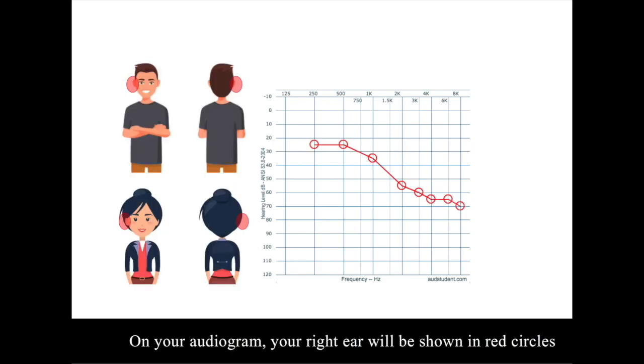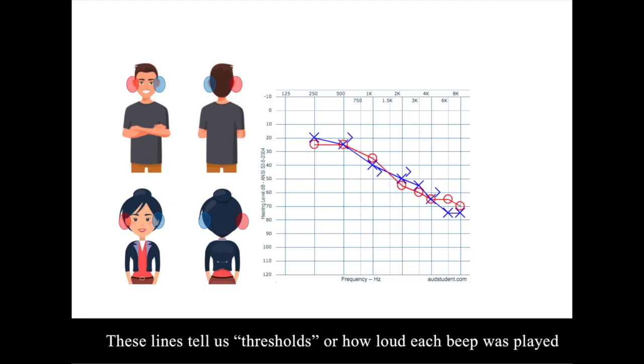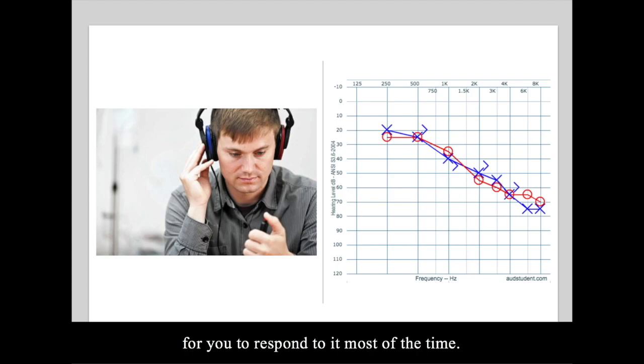On your audiogram, your right ear will be shown in red circles, and your left ear will be shown in blue X's. These lines tell us thresholds, or how loud each beep was played, for you to respond to it most of the time.